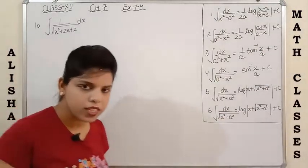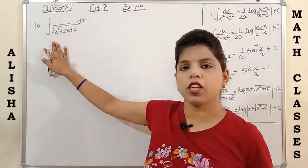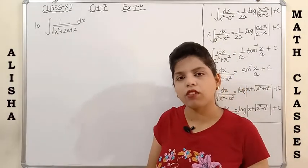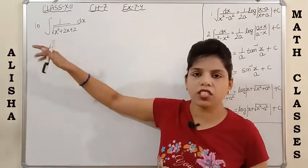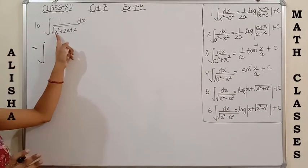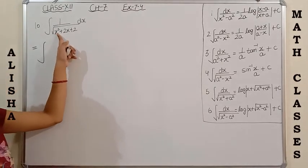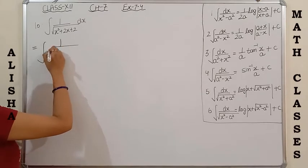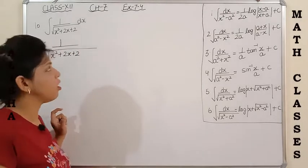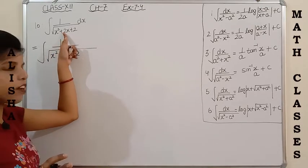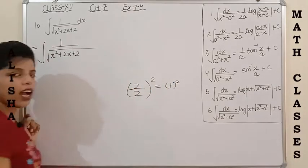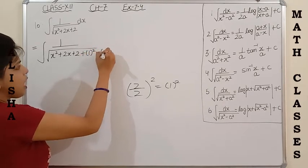Let's see how to do question number 10. We are having a quadratic equation in the denominator, so we follow the complete square method. The first step — since the coefficient of x² is 1 — we don't need to do anything. We go directly to step 2: add and subtract half the coefficient of x, whole square. The coefficient of x is 2, so half of 2 is 1, so we add and subtract 1².